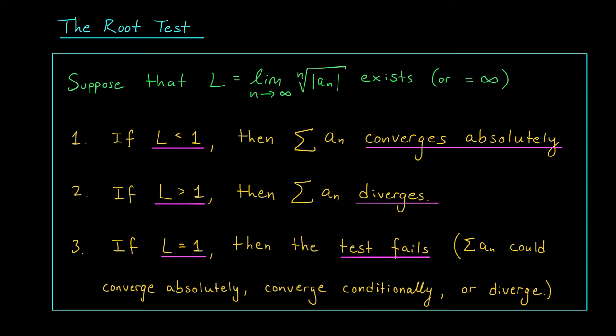Here it is, your very last series convergence test, the root test. Just like the ratio test, we compute a limit, and depending on whether that limit is bigger than 1, less than 1, or equal to 1, we can make certain conclusions. This time, the limit we're computing is the nth root of |aₙ| as n goes to infinity. We'll assume that limit exists or equals infinity, and denote it by L.